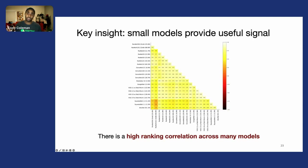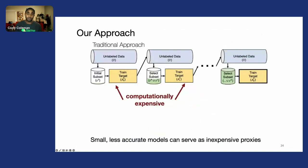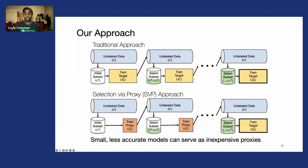If we were to select the best examples from one model, it's very likely that would be a good set of examples for another model too. So we can exploit this by taking small, less accurate models and using them as inexpensive proxies during the data selection process—we call this approach Selection by Proxy.